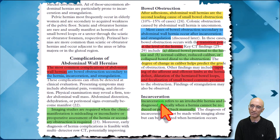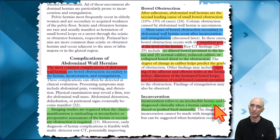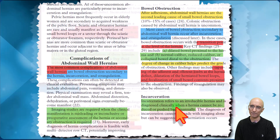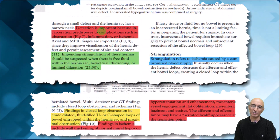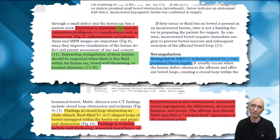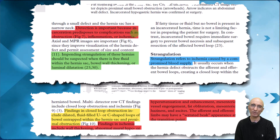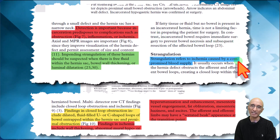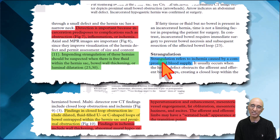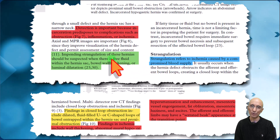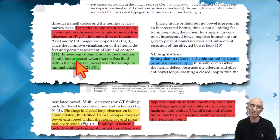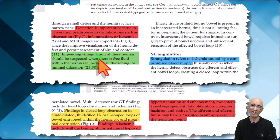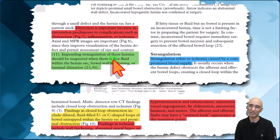With regards to incarceration, it refers to an irreducible hernia which is usually diagnosed clinically. Diagnosis of incarceration is important because this can lead to ischemia if not treated in a timely fashion. Signs of impending strangulation on CT would include fluid within the hernia sac, as we saw in our patient, bowel wall thickening, or luminal dilatation within the hernia sac.